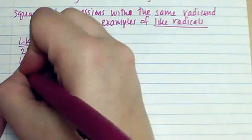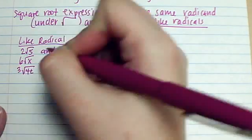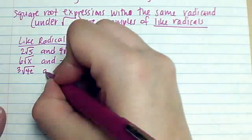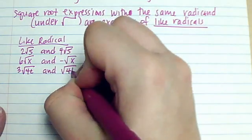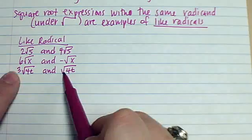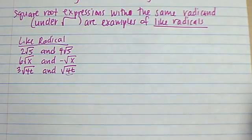Last example: 3 root 4t and just root 4t. Again, the number in front doesn't matter — it's what's underneath that does.